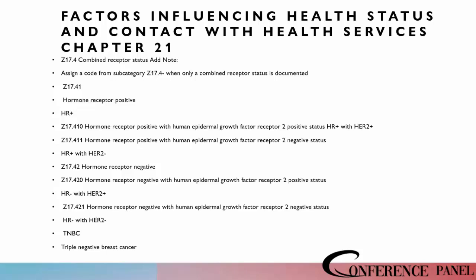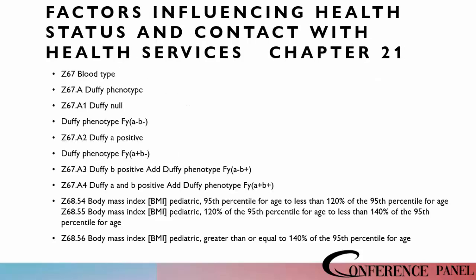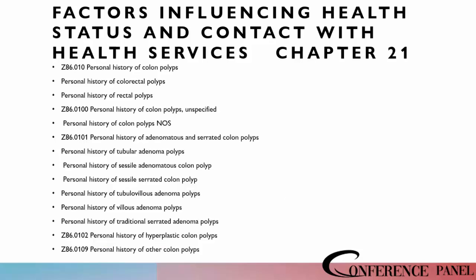We're going to see additional codes to be reported here. As we look at the social determinants of health, they continue to add codes with explanations to show how this patient's status in society is affecting their approach to healthcare. Still in this category, we've got quite a few new Z-codes, looking at ways to explain why a patient may not seek help and other factors that influence them. There are also some new codes for personal history of colon polyps.